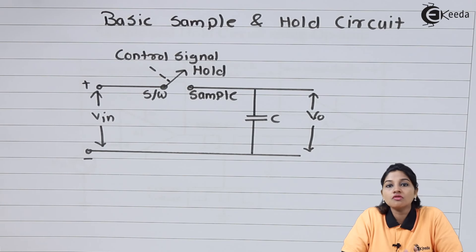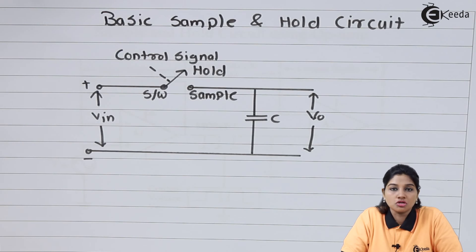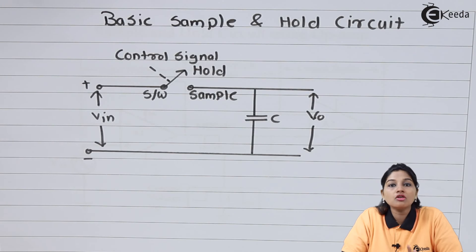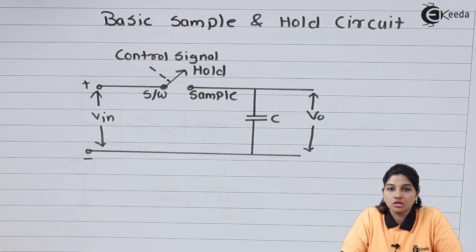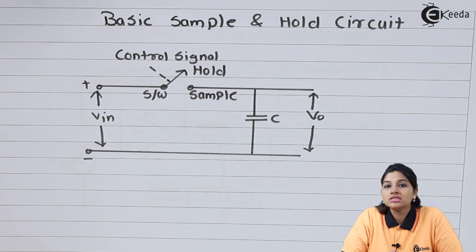Instead of a normal switch, we can use BJT or MOSFET as a switch. The switch is controlled by a control voltage and therefore the switch has two modes of operation: open switch and closed switch. Depending upon the position of the switch, there are two modes of operation of the basic sample and hold circuit — sampling mode and holding mode.